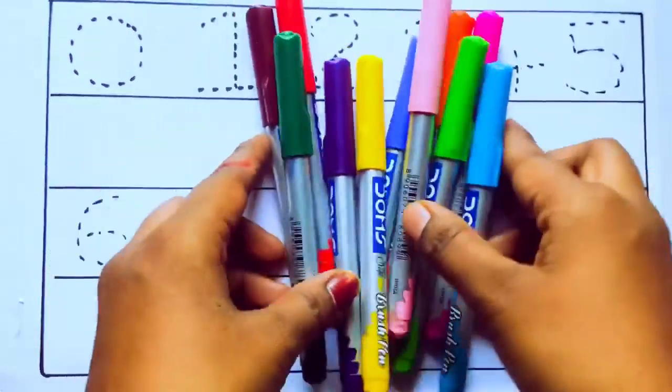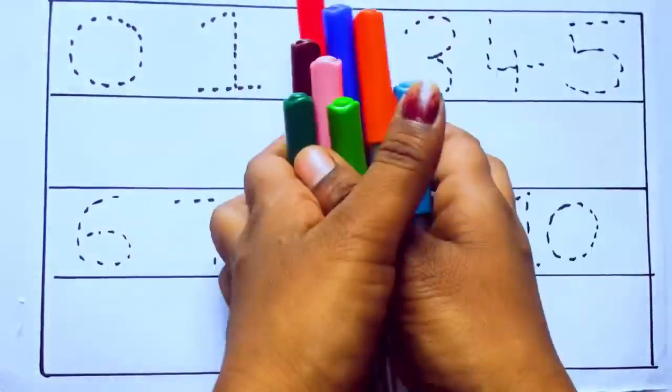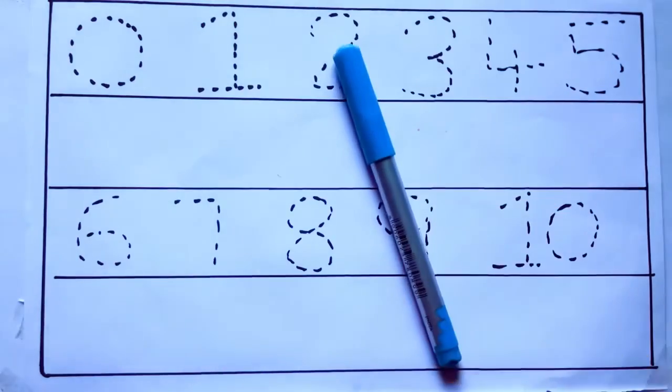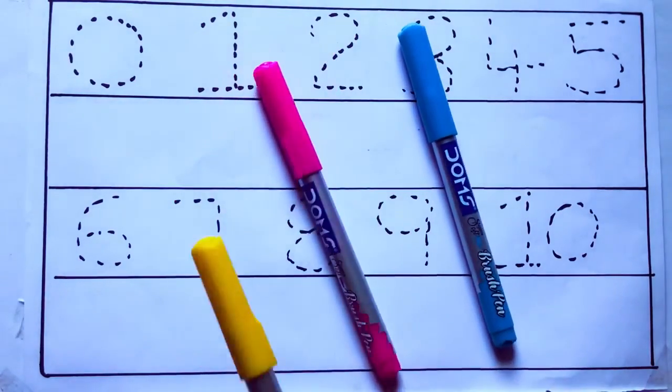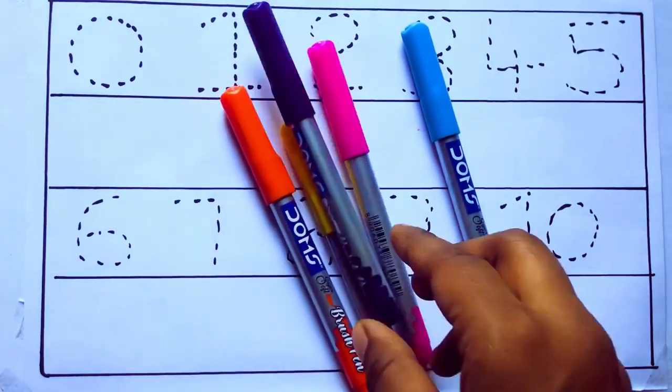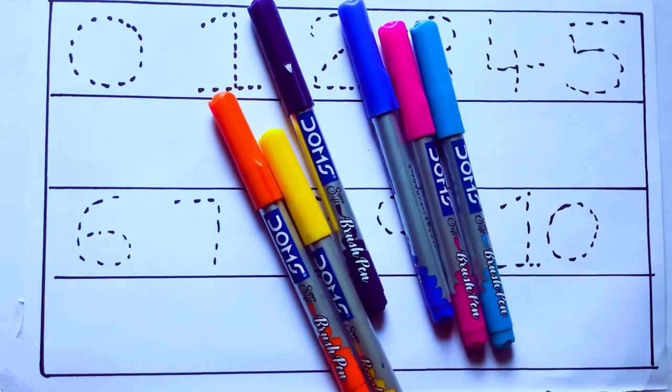Let's learn some colors. These are all the color pencils. Let's learn the names. Sky blue color, pink color, yellow color, orange color, violet color, blue color.